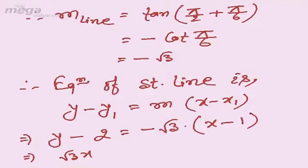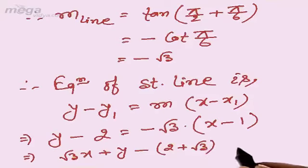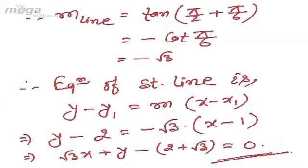you will get √3x + y - (2 + √3) = 0. And this is the equation of the straight line using point-slope form.